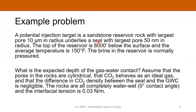The top of the reservoir is 8,000 feet below the surface, and the average temperature in the reservoir is 150 degrees Fahrenheit. We'll assume the brine in the reservoir is normally pressured. The question is: what is the expected depth of the gas water contact? We'll make a couple of simplifying assumptions: that the pores in the rocks are cylinders, that CO2 behaves as an ideal gas, that the difference in density of the CO2 between the seal and the gas water contact is negligible, both the reservoir and seal are completely water wet so the contact angle is zero, and the interfacial tension between CO2 and brine is 0.03 newtons per meter.